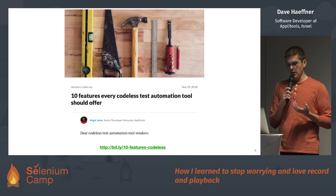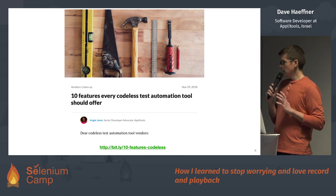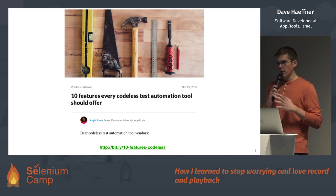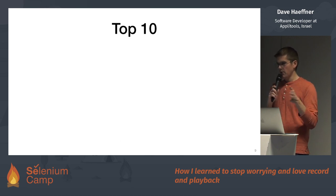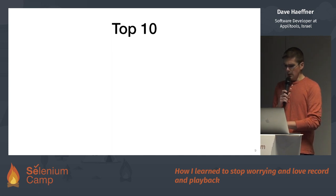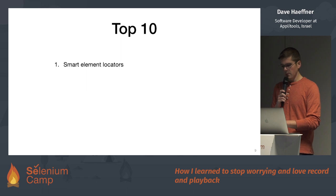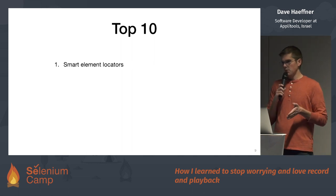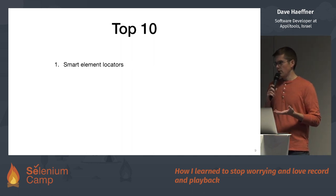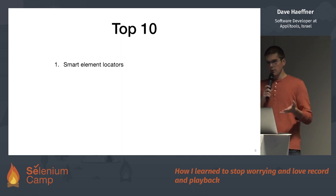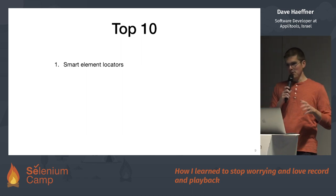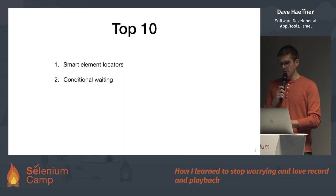Angie Jones recently wrote a blog post on 10 features every codeless test automation tool should offer. It's a good rubric if you're looking at more than one tool to get a sense of what's out there, what's crap and what's worthwhile. The first feature she thinks a tool should have is smart element locators. That's probably one of the most important ones because that's where all record and playback tools have historically fallen down — brittle locators that you record, play back, and then it's broken. Difficult to maintain tests over time.